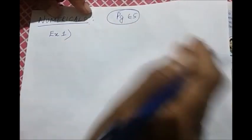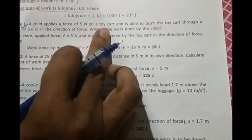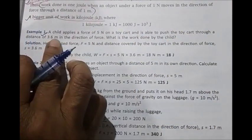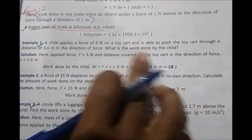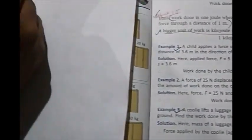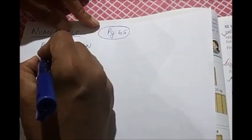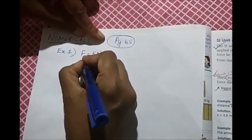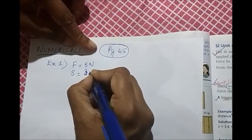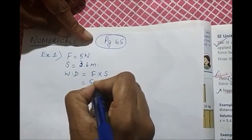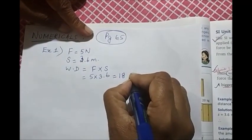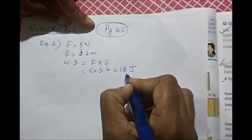I will be doing two example numericals given in page 65. Example number 1. A child applies a force of 5 newton on a toy cart and is able to push the toy cart through a distance of 3.6 meter in the direction of force. What is the work done by the child? Now let us write what all are given. A child applies a force of 5 newton. So F is equal to 5 newton. And the toy moves through a distance of 3.6 meter, or we call it displacement, 3.6 meter. Now we have to calculate the work done. Simple. Use this formula F into S. So 5 into 3.6. It will be 18 and the unit will be Joule. So work done will be 18 Joule.